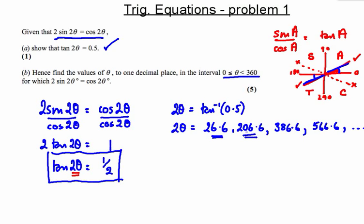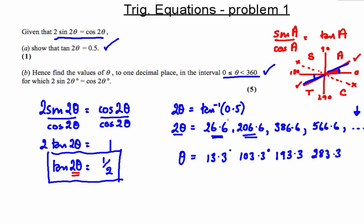Now, why am I generating extra angles? Because I have one final step: if 2θ can be all these angles, then θ can be — well — 13.3 degrees. And here's why we kept going: we can divide by 2, and we're still in range. Dividing by 2 again gives 283.3. If we look at the next one, 26.6 plus 360 plus 360 divided by 2, that will be out of range. So what we've got is four solutions to our original problem.